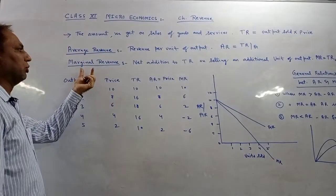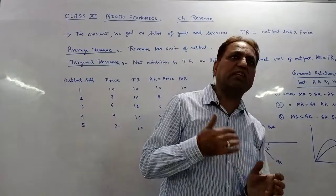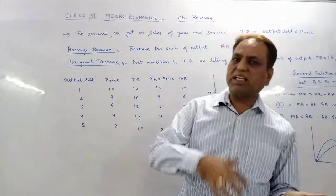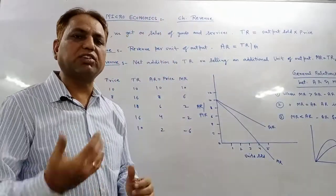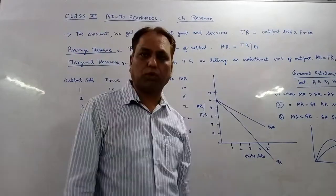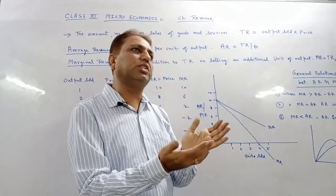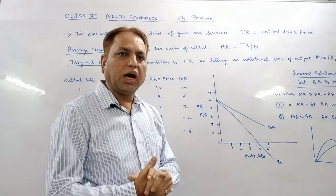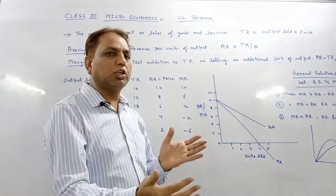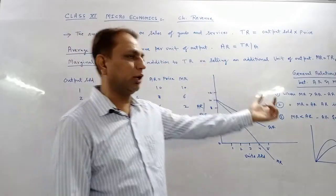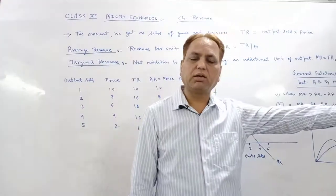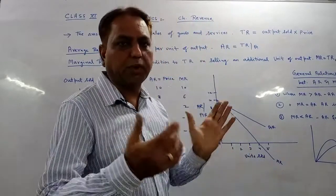Moving ahead — Marginal Revenue. What is marginal revenue? Just as we did marginal product in TPA and PMP, then marginal cost in TC, AC, MC — similarly in TR, AR, MR, we have MR, i.e., marginal revenue. It is the net addition to total revenue on selling an additional unit of output. For example, if I had sold 5 units and was getting 1000 rupees, now on selling 6 units I get 1200 rupees, so on selling one additional unit the TR obtained is 200 rupees — that becomes my MR. The formula for MR is: MR equals TR2 minus TR1.